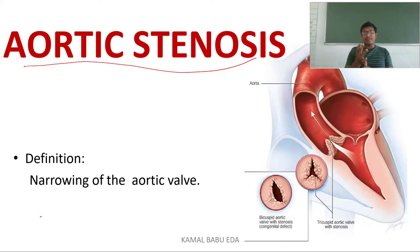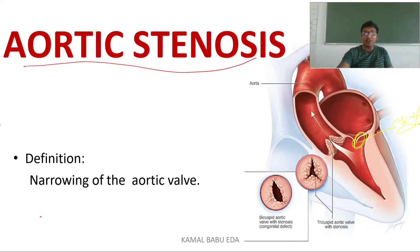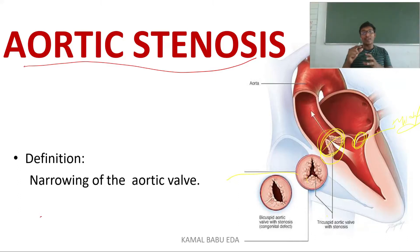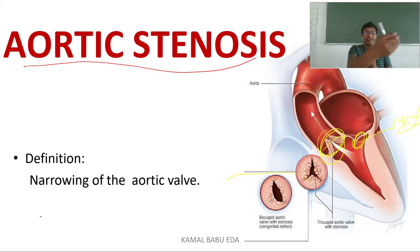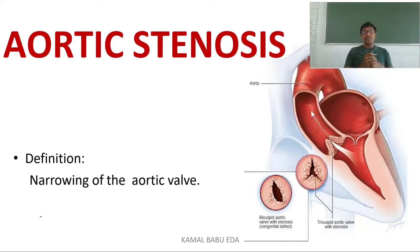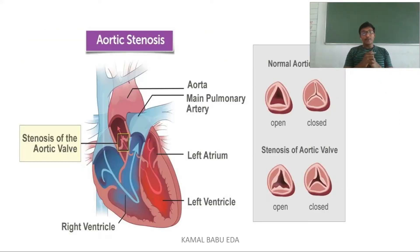We have two semilunar valves and two atrioventricular valves. The bicuspid valve situated on the left side is also called the mitral valve, and the tricuspid valve is situated on the right side. The aortic valve is situated at the opening of the aortic arch near the left ventricle, acting as a door between the ventricle and the arch of aorta, preventing re-entry of blood back into the ventricle.